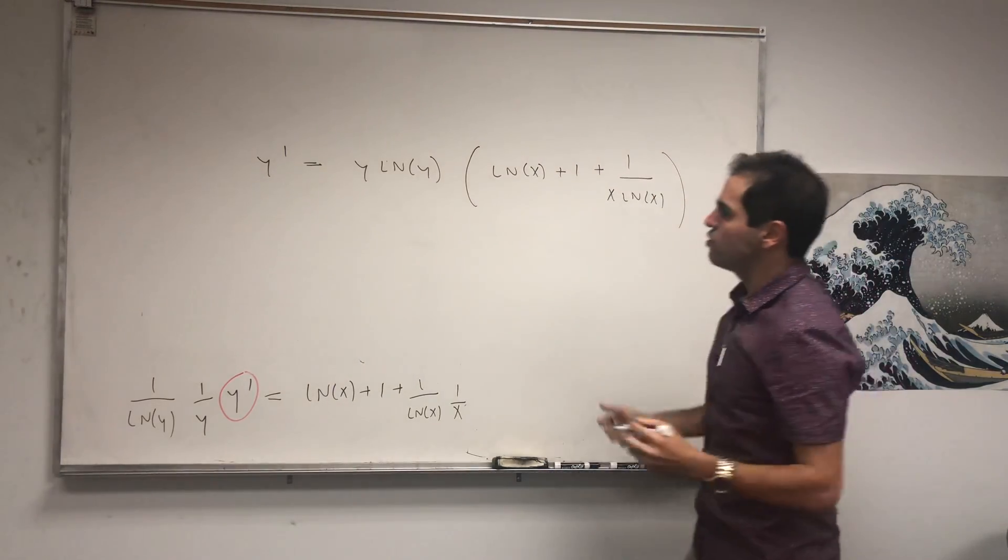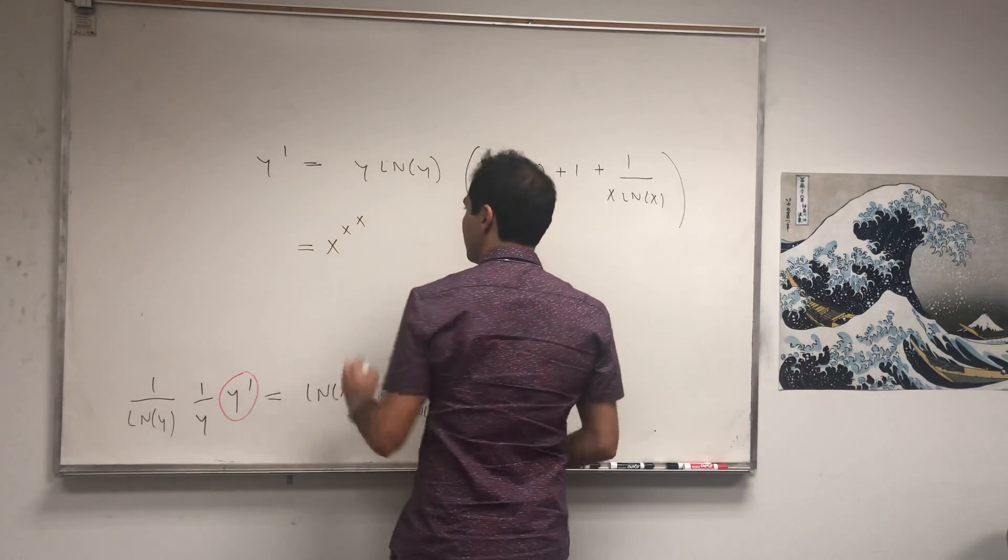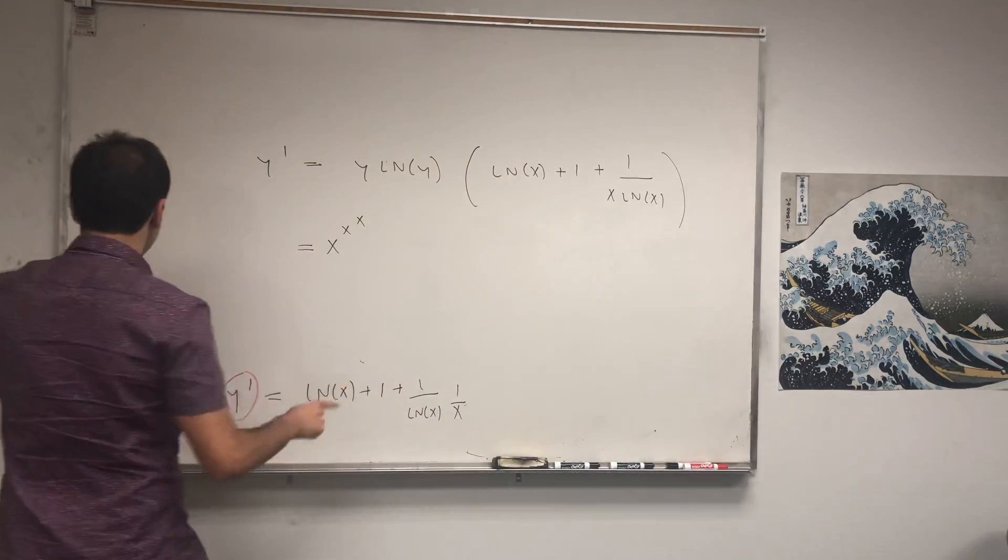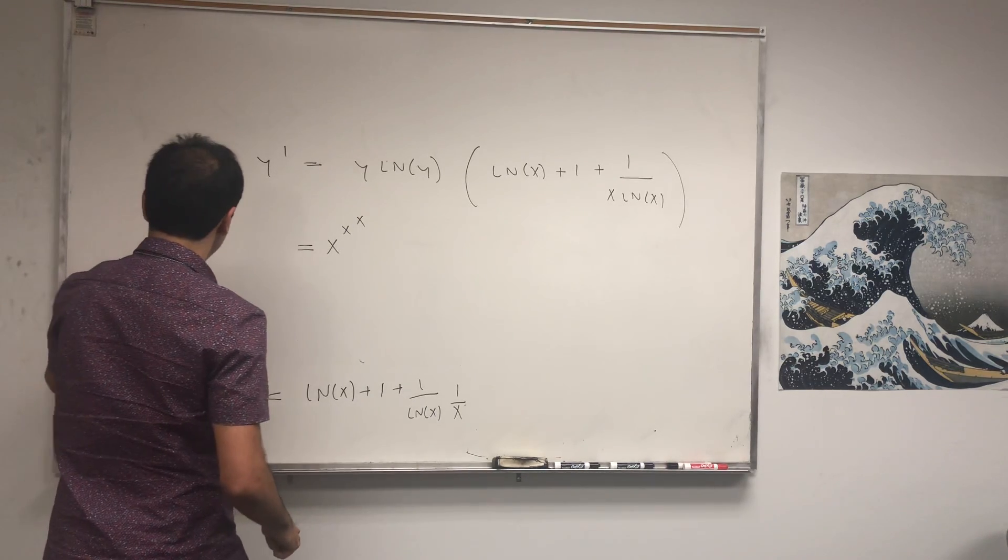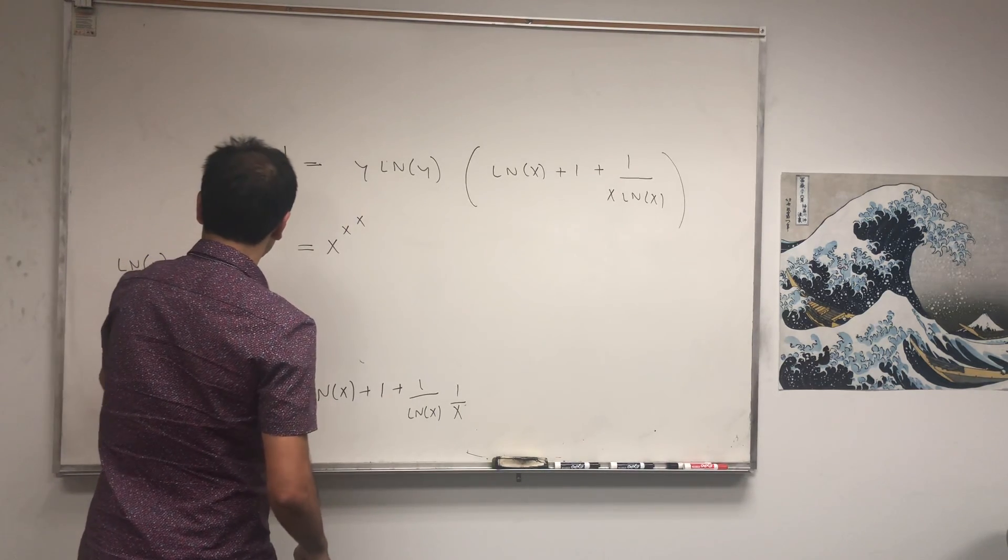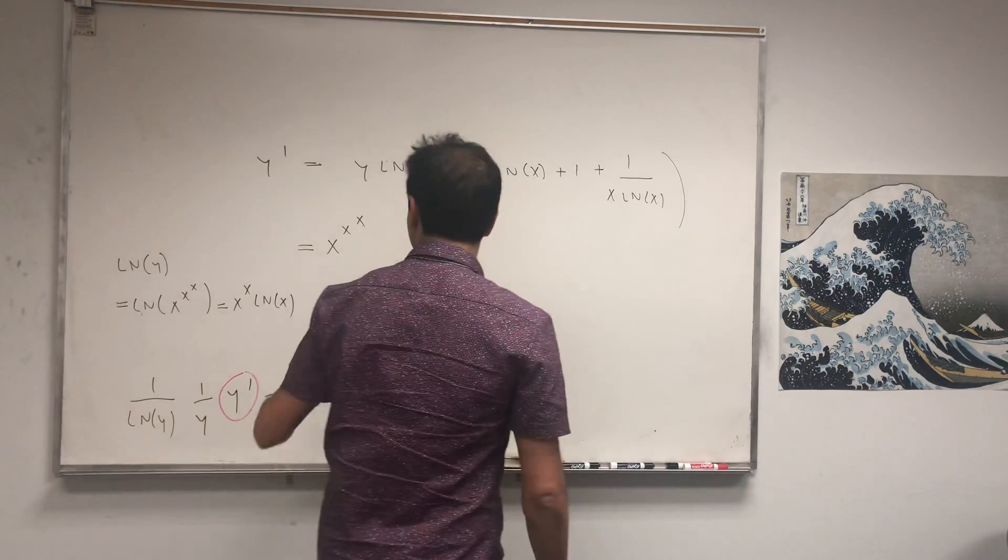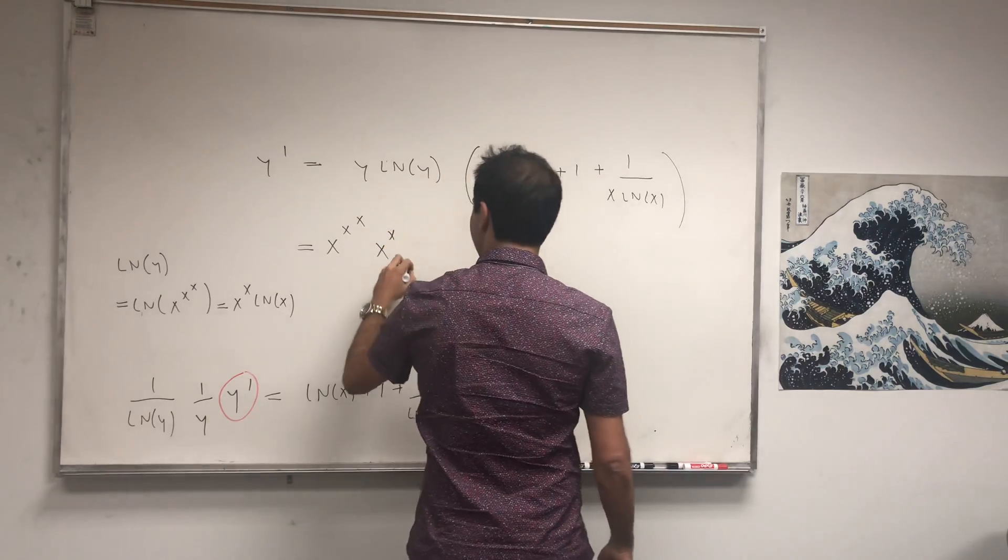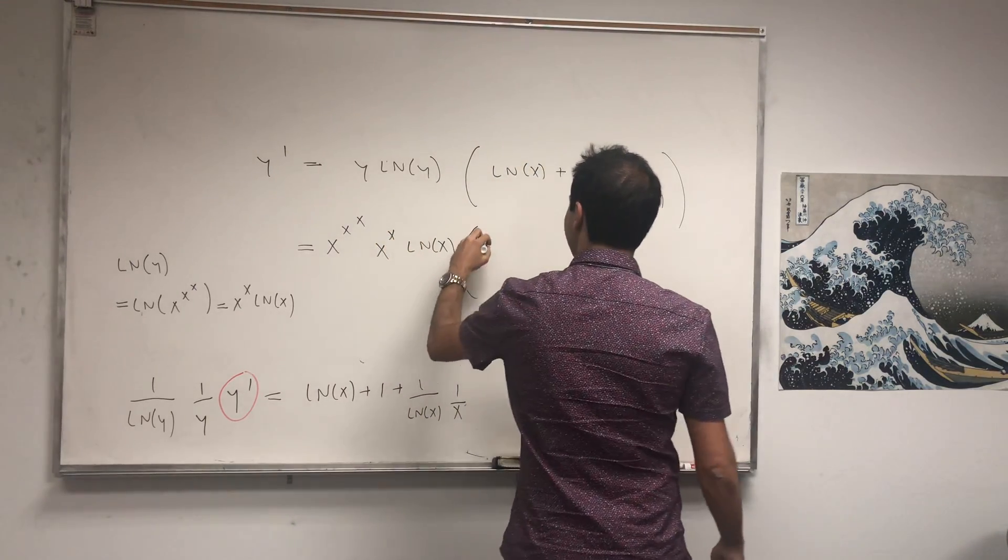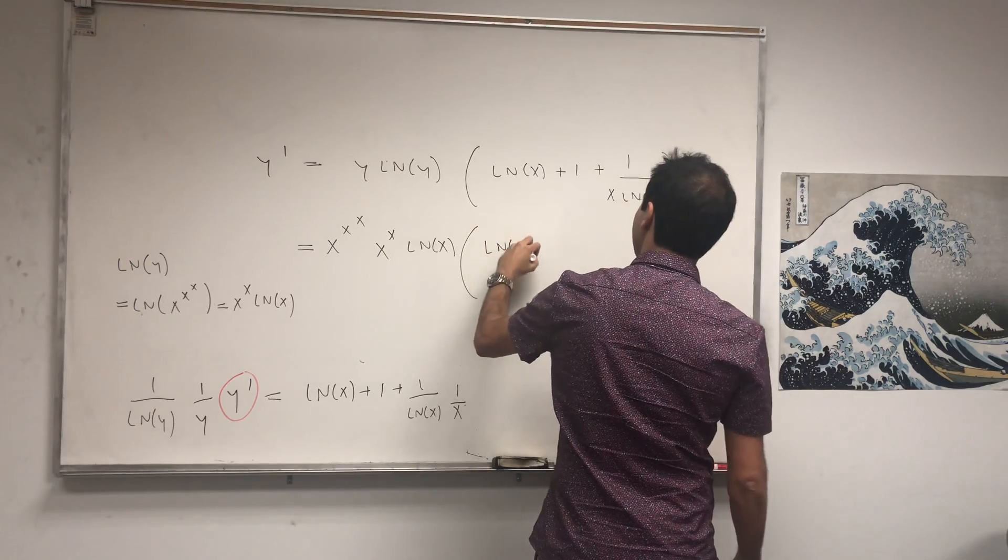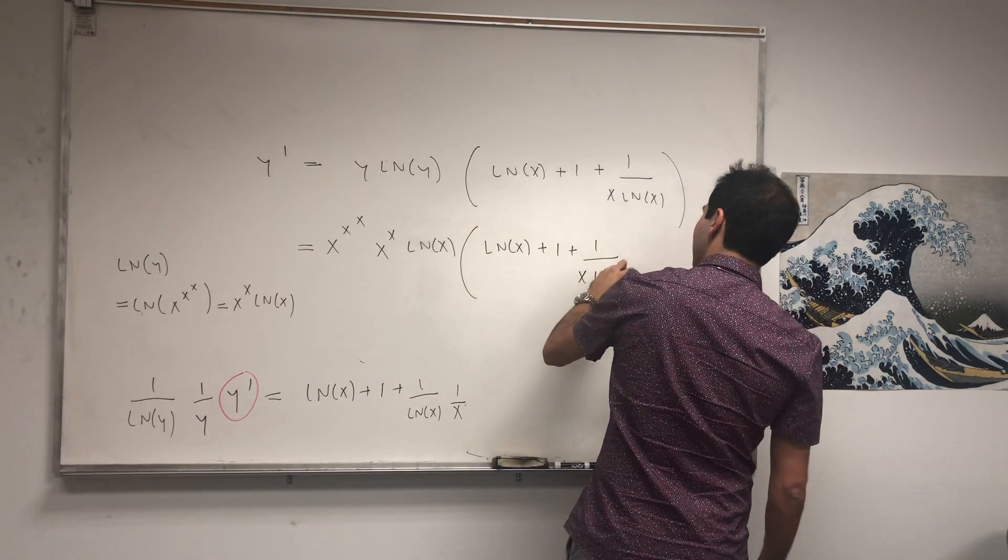And well, what is y? Y is just x to the x to the x. ln of y, I like to remind you, that's ln of x to the x to the x. And that's x to the x ln of x. So, times this, times x to the x ln of x. Times this whole chunk, so ln of x plus 1, plus 1 over x ln of x. Which you can simplify to something quite nice.